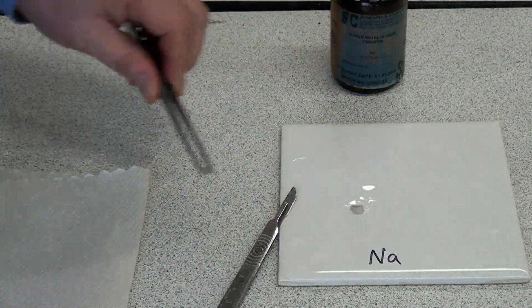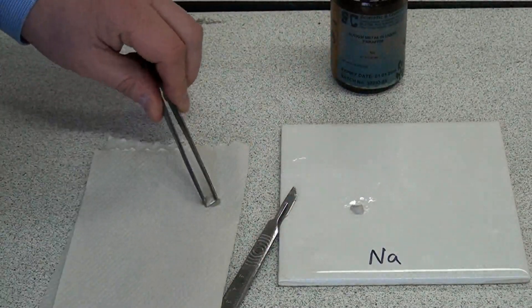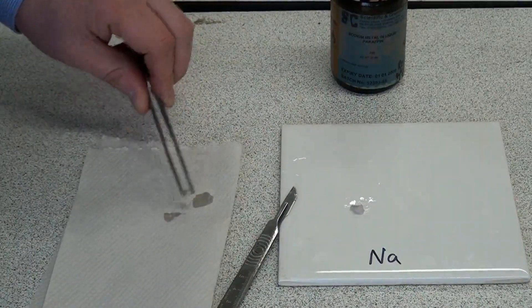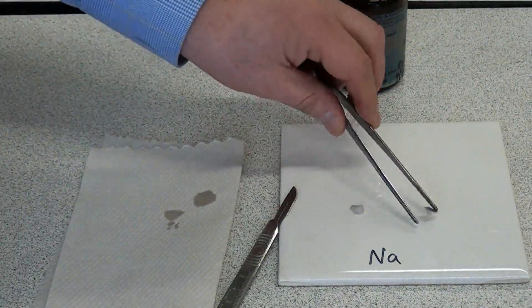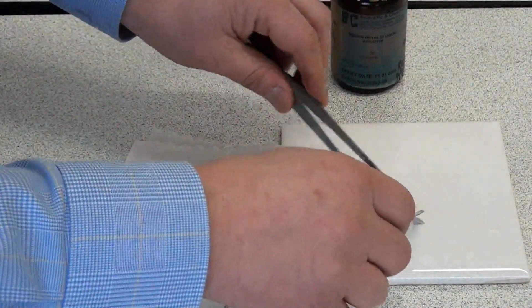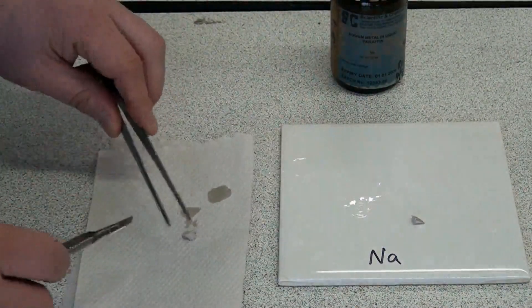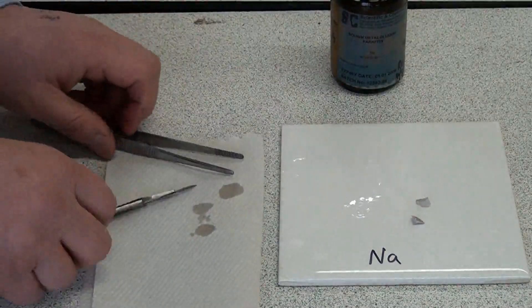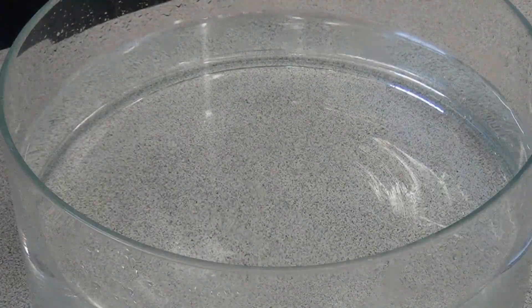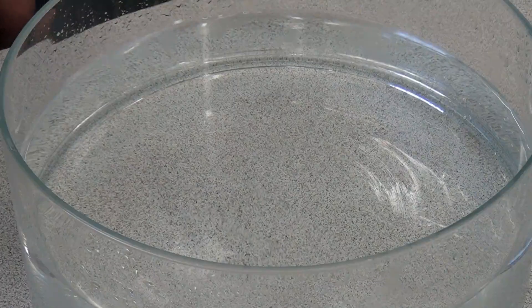Once again I'm going to dab it on the paper towel just to get rid of that excess oil that it's been stored in, and then put it on a dry part of the tile. Same again with this piece. And now that's ready to add to the water. I'm going to put a piece of sodium in the water, let's see what happens.